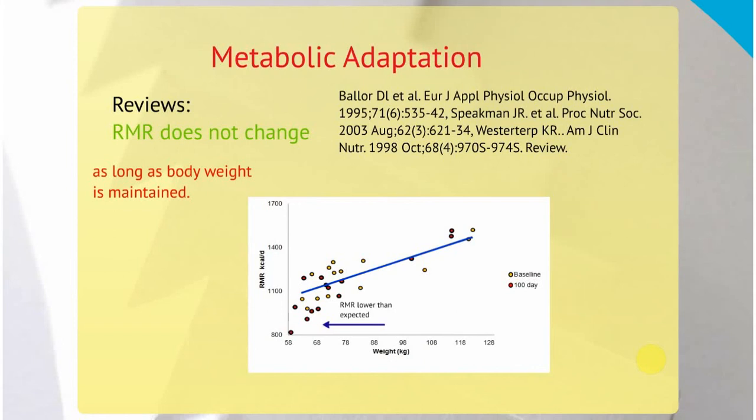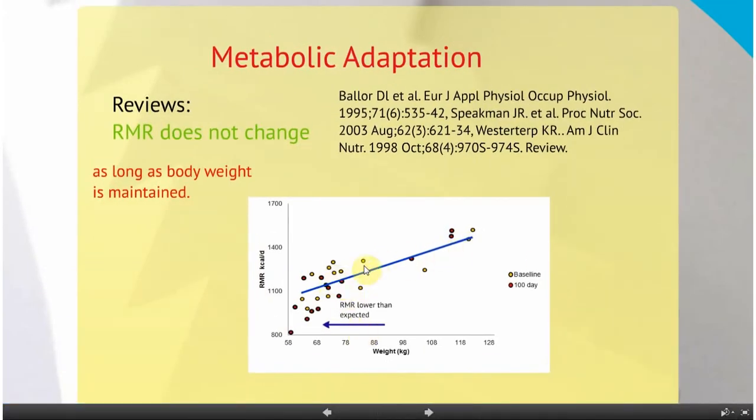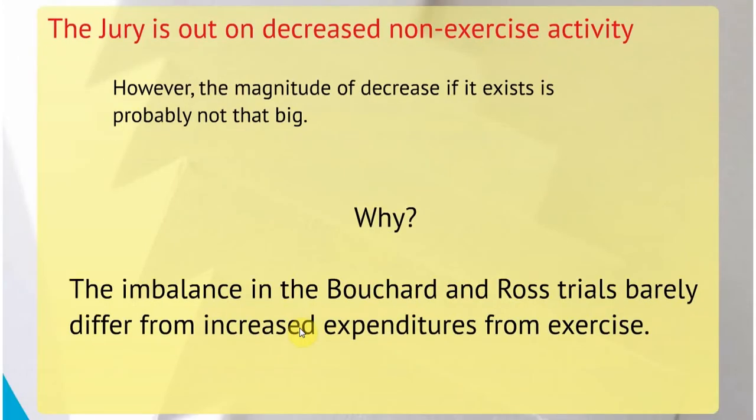Because if energy intake also goes up, then body composition would change. Resting metabolic rate is correlated to body composition. So I needed a study where individuals were confined and I knew how much they were eating and it was controlled. This is the Bouchard study. This line here is regressed through baseline data, which is the yellow. And the red is the 100-day resting metabolic rate. You see that, especially on the lean edge, the 100-day data falls off the curve. So there is evidence of metabolic adaptation if intake is controlled at baseline levels.